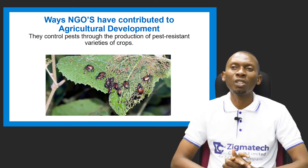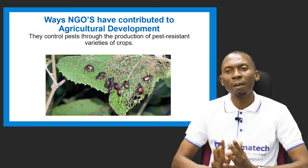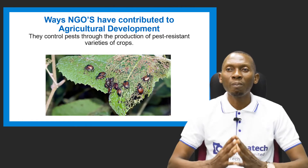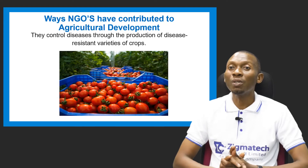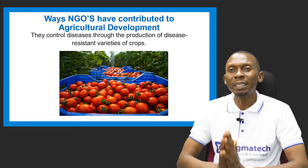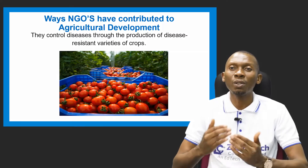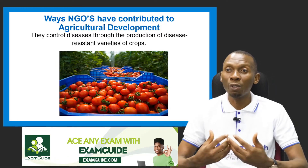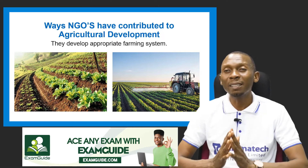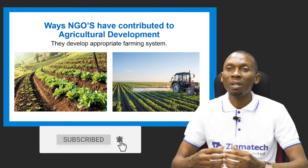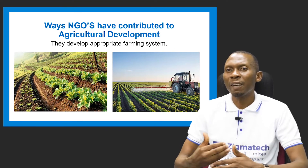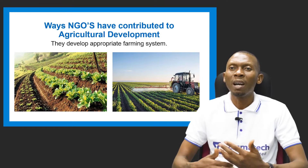They also help to produce pest resistant varieties of crops. Pest is a major challenge in agricultural production that can lead to heavy losses, and so these NGOs step in to help produce pest resistant varieties. Not only pest — diseases also lead to heavy economic losses, and so these NGOs help produce disease resistant varieties of crops. They also help to develop appropriate farming systems, which could include mixed farming, crop rotation, and different farming systems to step up agricultural production.